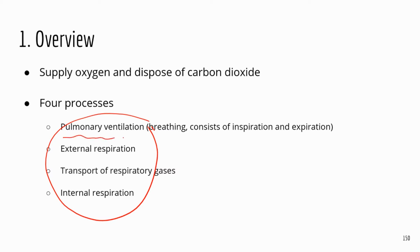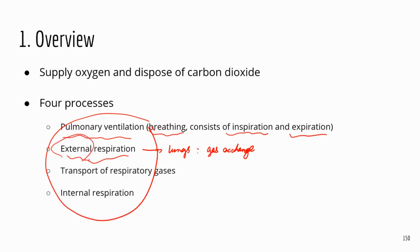The first step is pulmonary ventilation — this is basically breathing. The second step is external respiration, which happens at the lungs. You can think of it as gas exchange at the lungs. It's called external because your lungs are connected to the external environment through the respiratory tract. The third step is transport: the blood is going to transport the oxygen it picks up at the lungs to the body, delivering oxygen to the cells and picking up carbon dioxide from the cells.